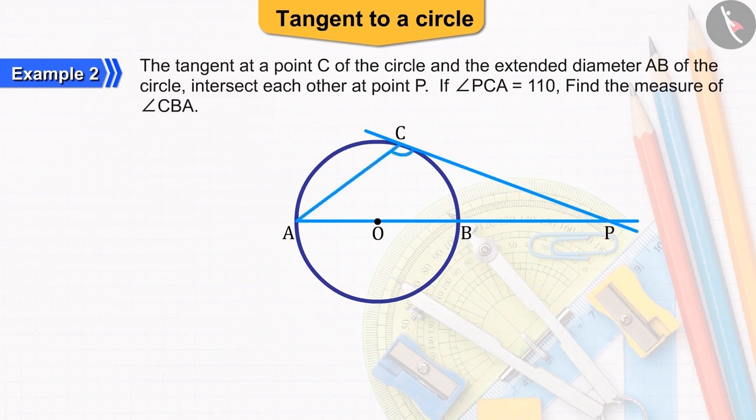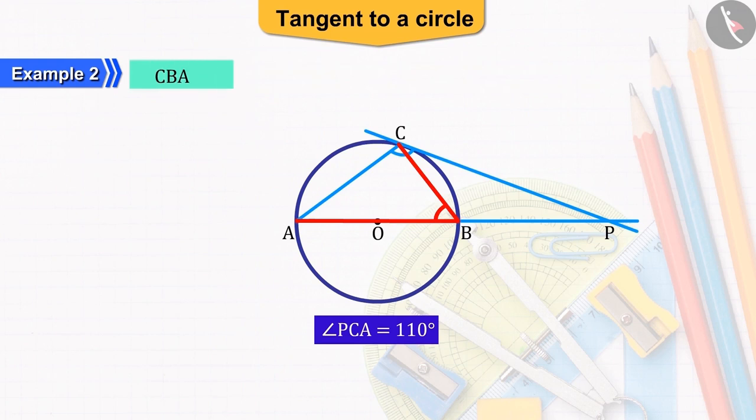From the question, we know that the value of angle PCA is 110 degrees and we have to find the value of angle CBA.